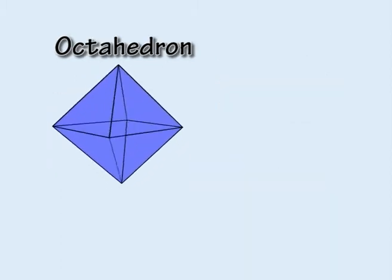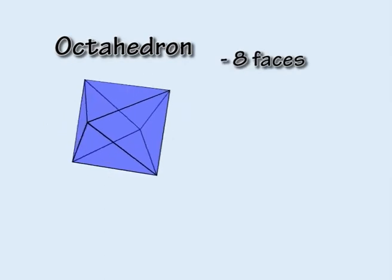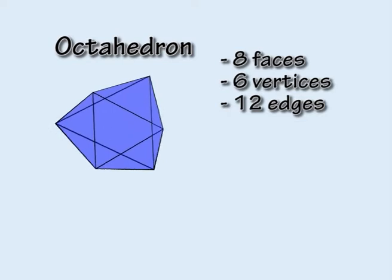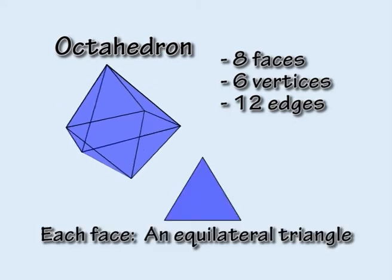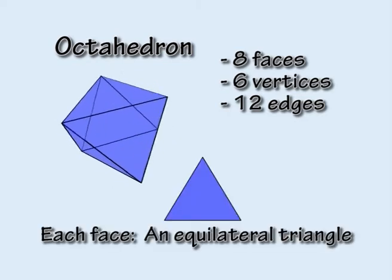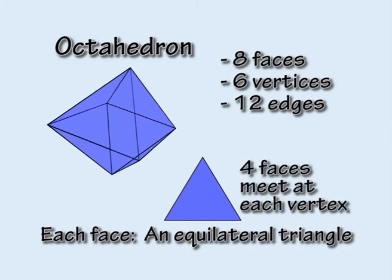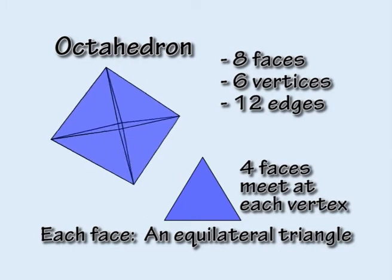The octahedron has eight faces, six vertices, and twelve edges. As with the tetrahedron, each face is an equilateral triangle. Only now, four triangular faces meet at each vertex.